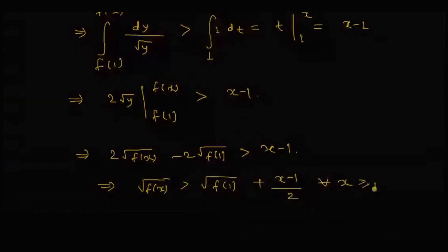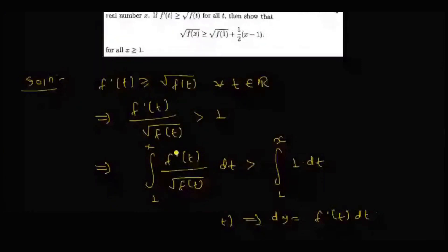Which implies that root F X is greater than root F 1 plus X minus 1 by 2 for all X greater than or equal to 1. Here this is possible if X is greater than 1, because we are integrating with X as the upper limit and 1 as the lower bound for the integration.